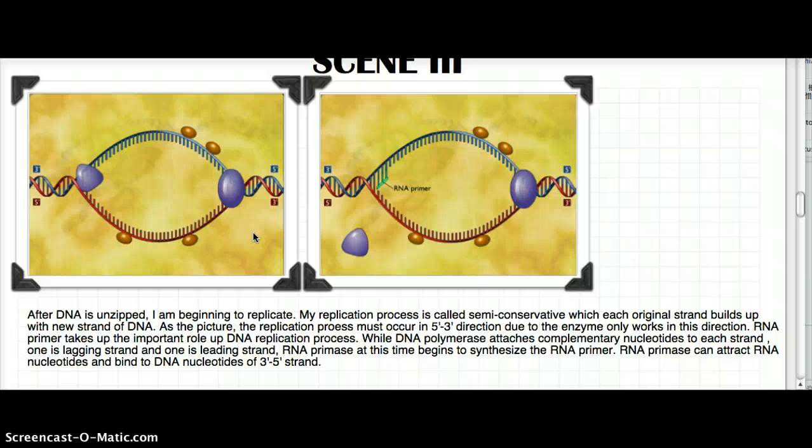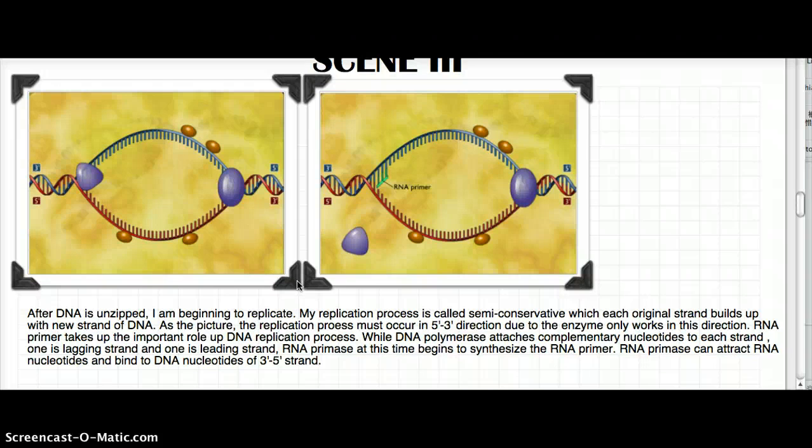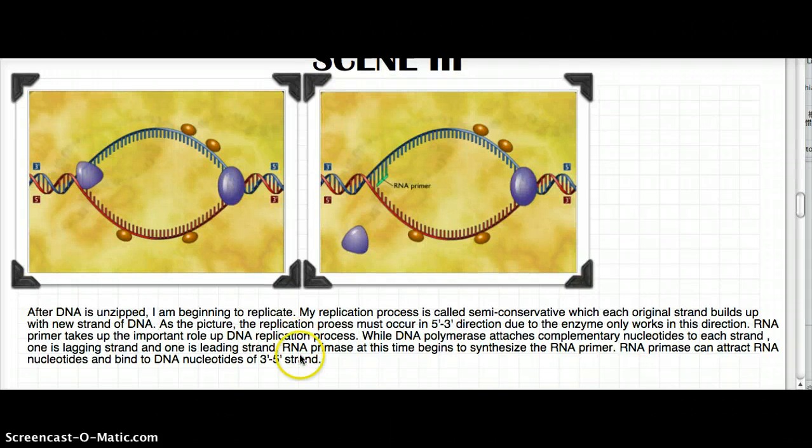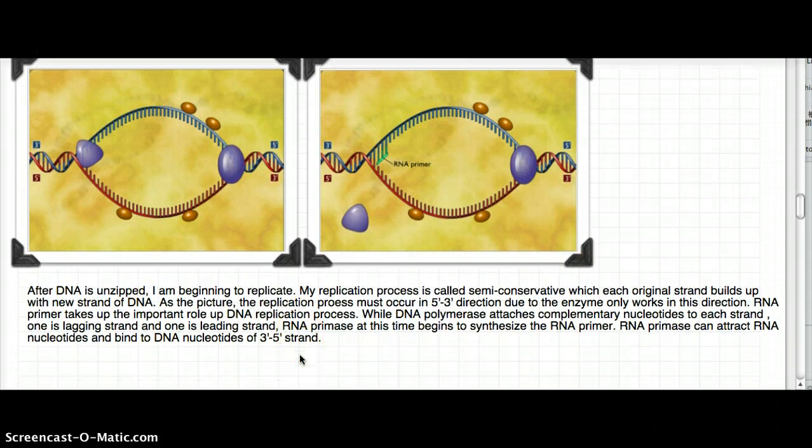RNA primers play an important role in the DNA replication process. How are RNA primers made? They're made by primase, which begins to synthesize the RNA primer. RNA primers can attract RNA nucleotides and bind to the DNA nucleotides of the 3 to 5 strand.